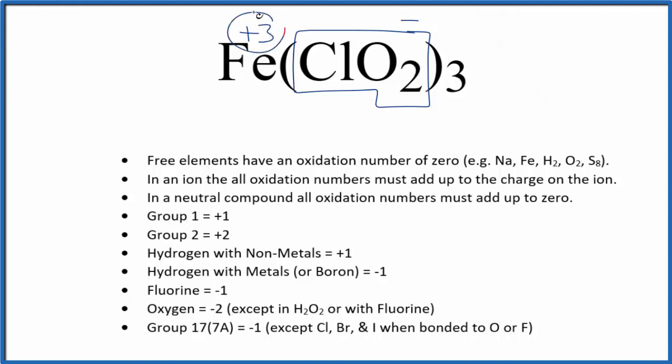If you need help figuring out the oxidation number for the chlorine here in the chloride ion, there's a link at the end of this video to help you. This is Dr. B with the oxidation state for the iron in iron 3 chloride—it's plus 3. Thanks for watching.